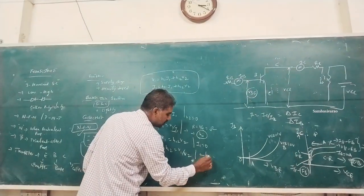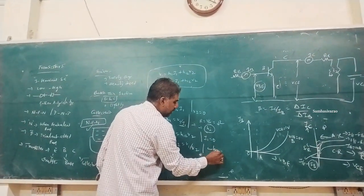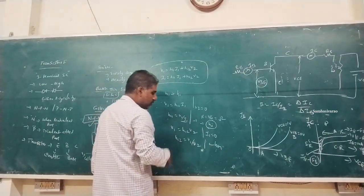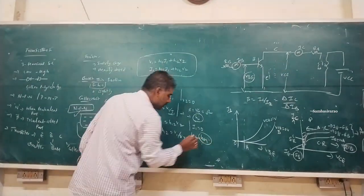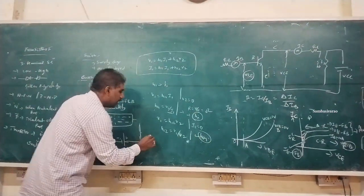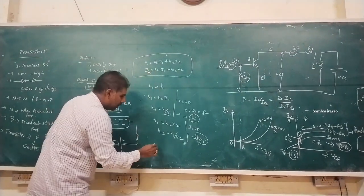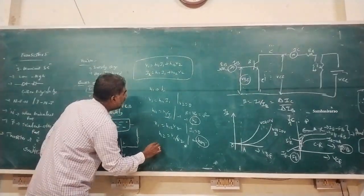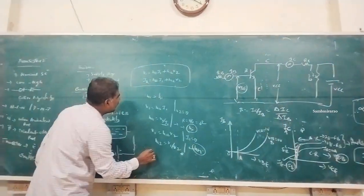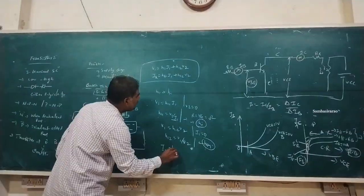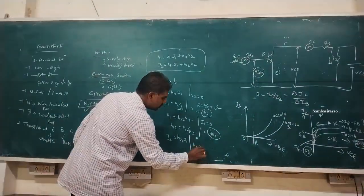H12 represents a voltage ratio and is called HR (reverse voltage). For H21, using I2 = H21·I1 with V2 equal to zero: H21 = I2/I1.